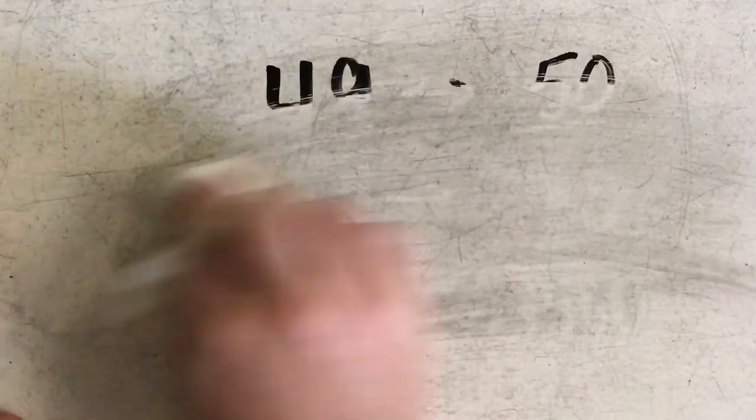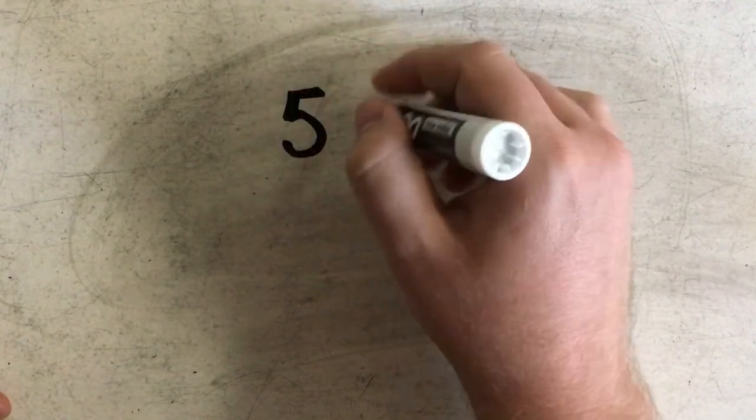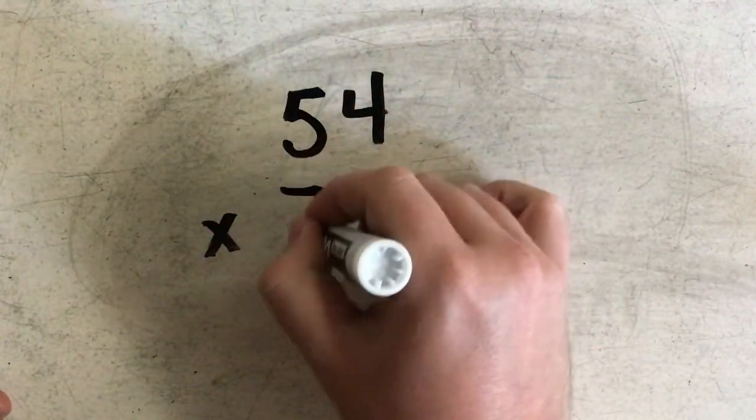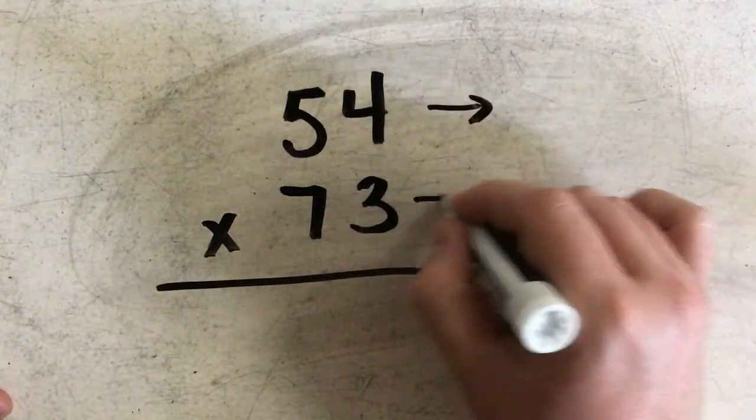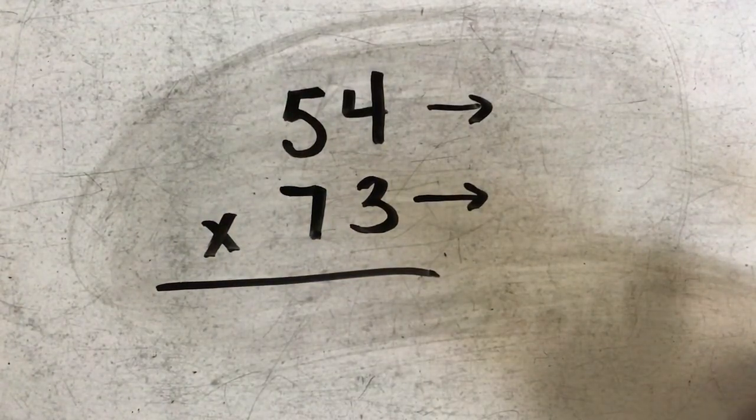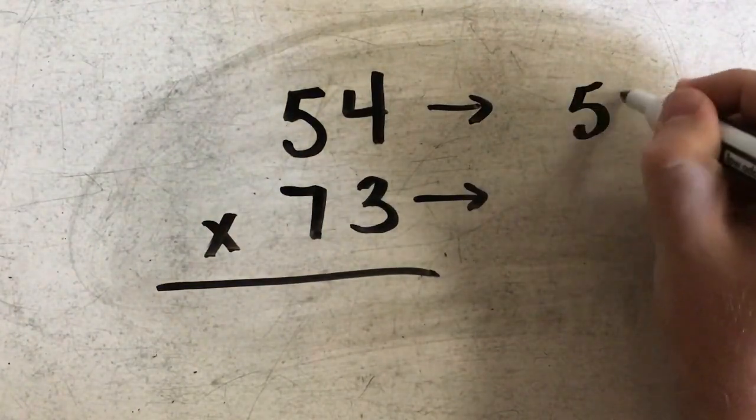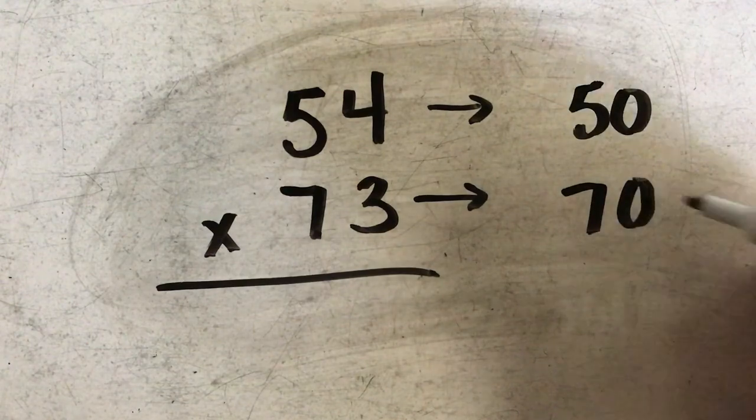Let's do one more example. Okay. So 54 times 73. Again, I'm going to round both of these to the tens place. 54 rounds down to 50. 73 also rounds down to 70.